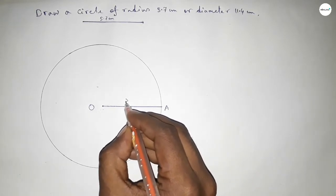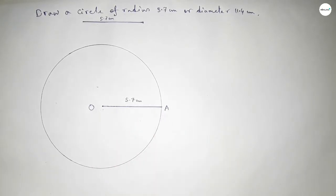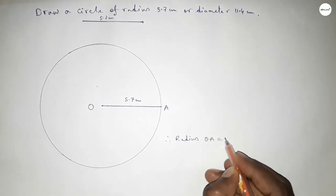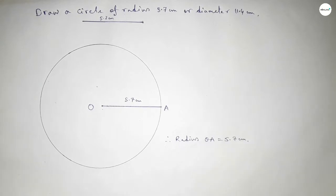So this is 5.7 centimeter. Therefore, radius OA equals 5.7 centimeter. That's all, thanks for watching. If this video is helpful to you, then please share it with your friend. Thanks for watching.